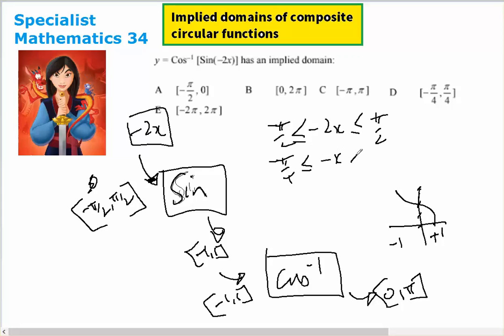And x, that's π over 4 and that's minus π over 4 when you divide by negative one, but that gets turned around. So x is bigger than minus π over 4 and less than π over 4.